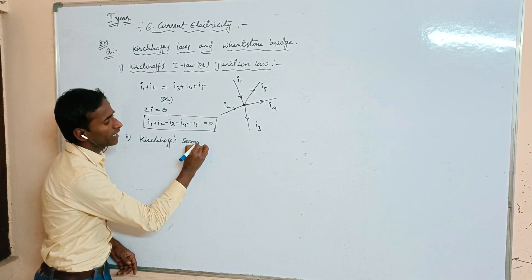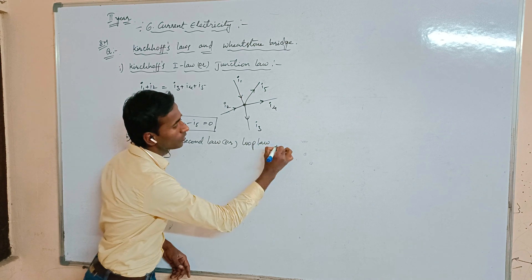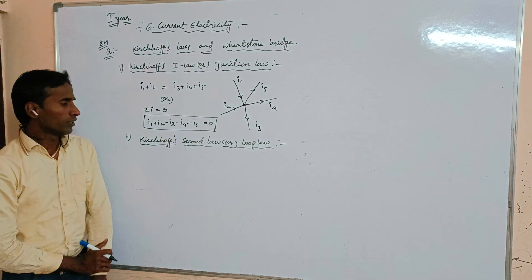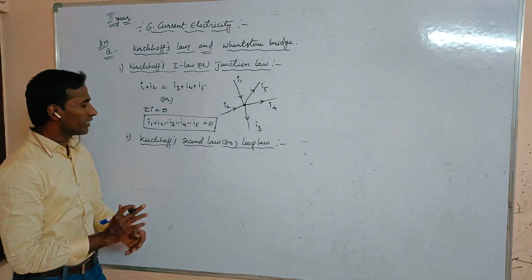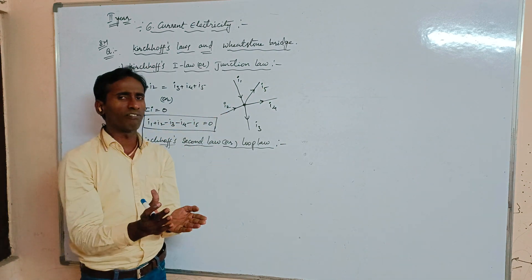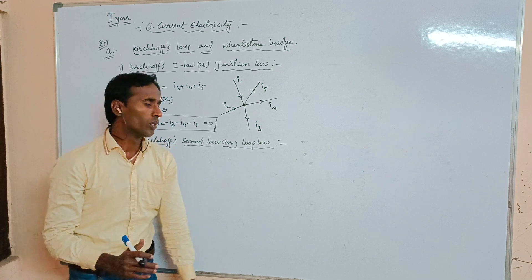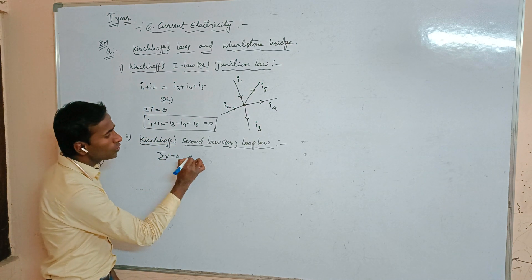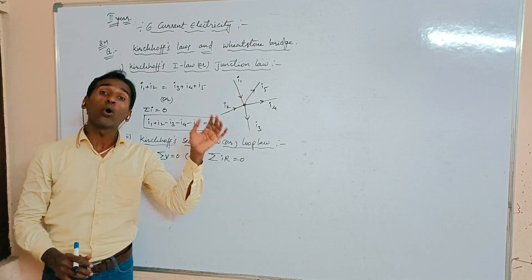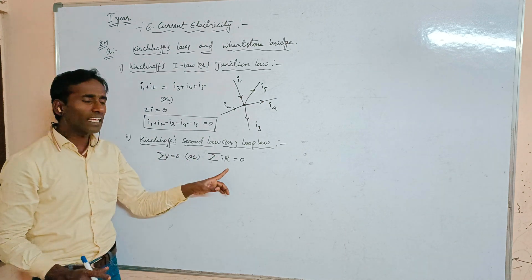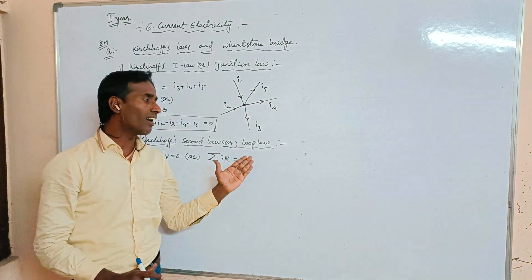Kirchhoff's Second Law is also called the Loop Law or Voltage Law. It states: the algebraic sum of total potential difference through any closed loop is equal to zero, that is sigma V = 0. According to Ohm's Law, V = IR, so we can also write sigma IR = 0.